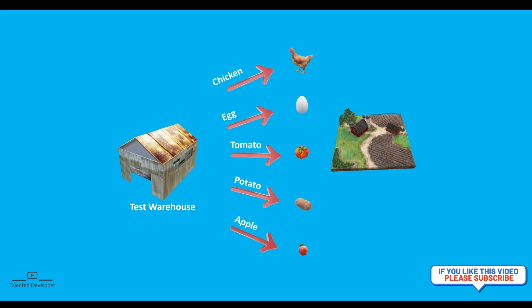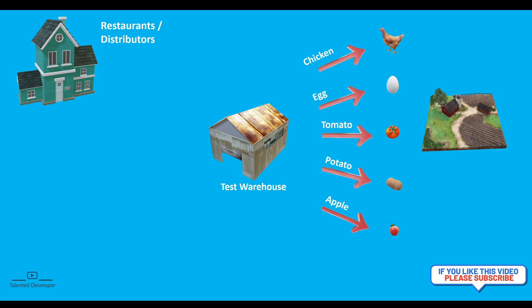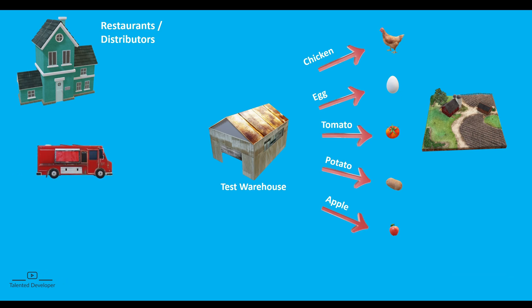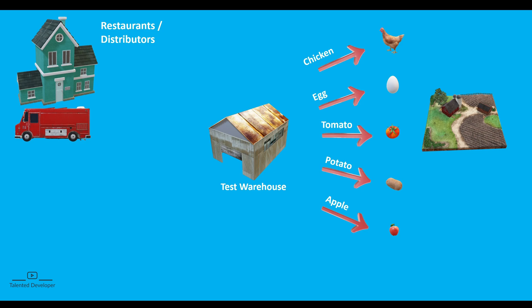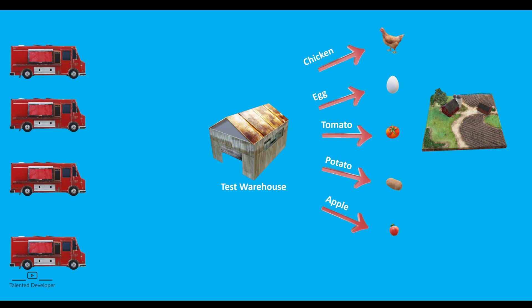Now a restaurant owner or food distributor will send their vehicle directly to your warehouse. From the warehouse they will say 'I need 500 eggs.' You go to the warehouse endpoint, take 500 eggs, put them in the lorry, and the lorry goes back to the restaurant. You can handle many lorries at the same time — all lorries come to your warehouse, you fulfill their requirements, deliver all the products, and the lorry goes back to the restaurant.